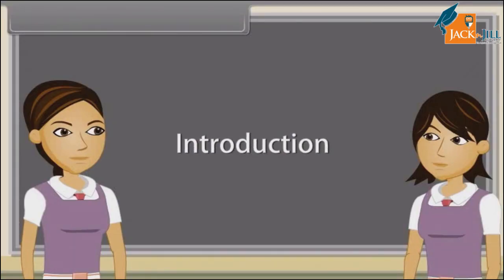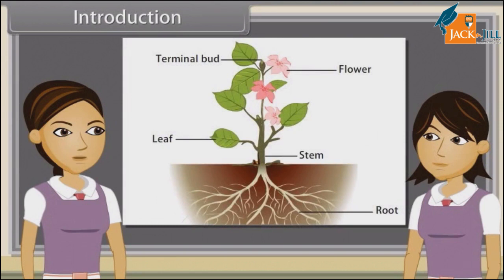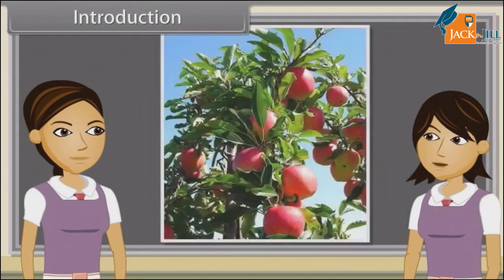When we observe a plant, we see that every plant has roots, stem and leaves. Plants also have flowers and fruits. We have already discussed characteristics, types, modifications and functions of roots and stems. Now we will study the leaf.